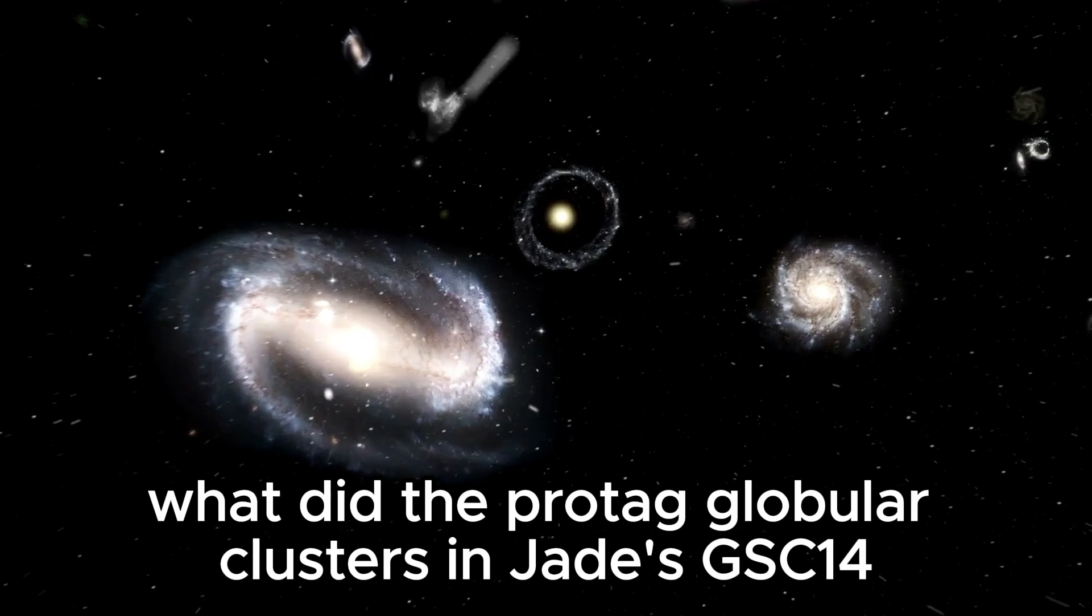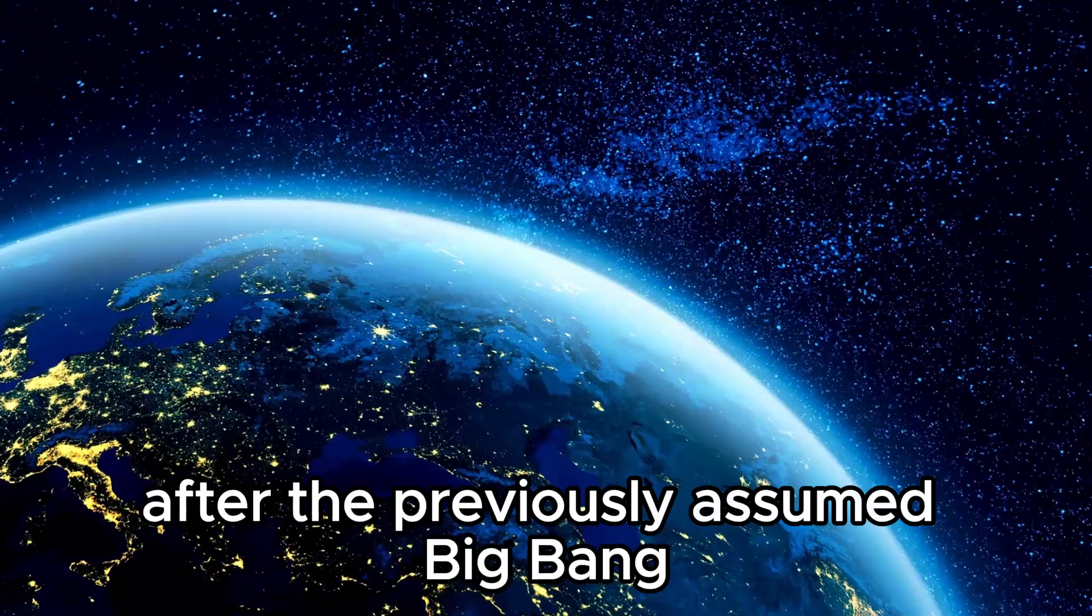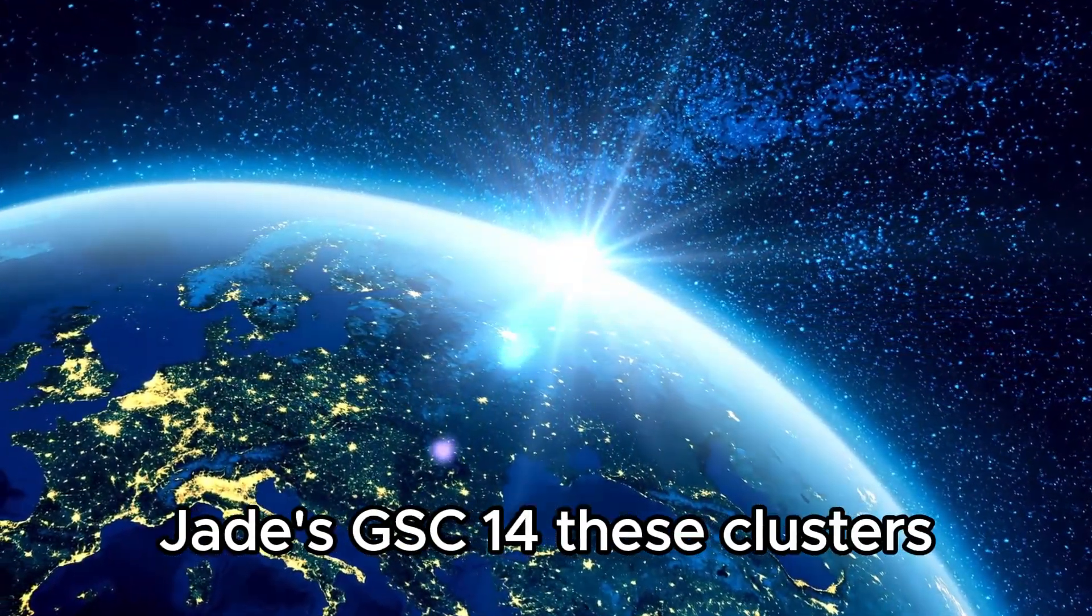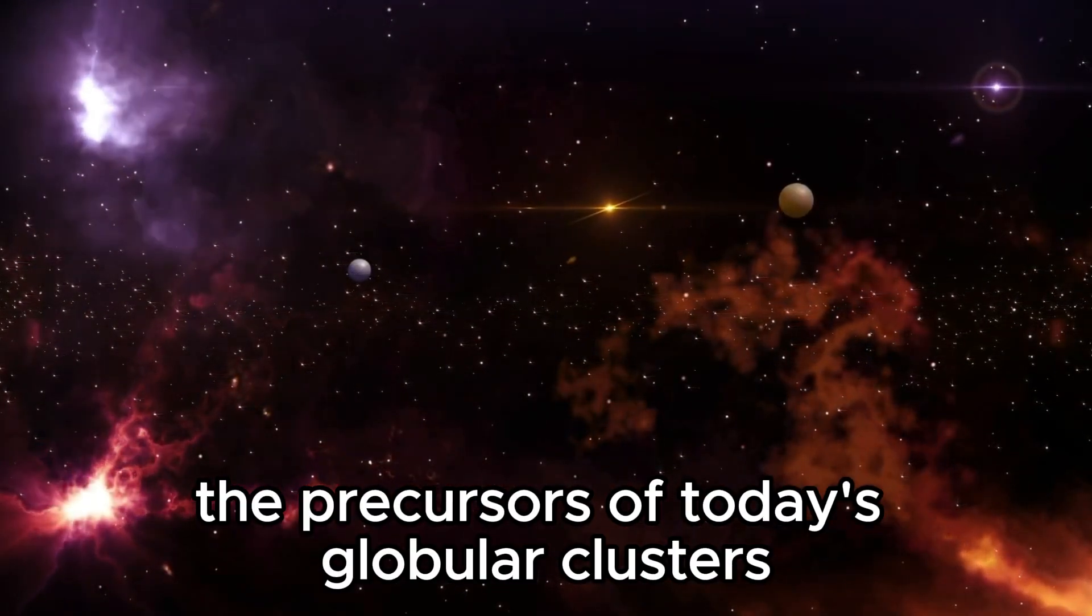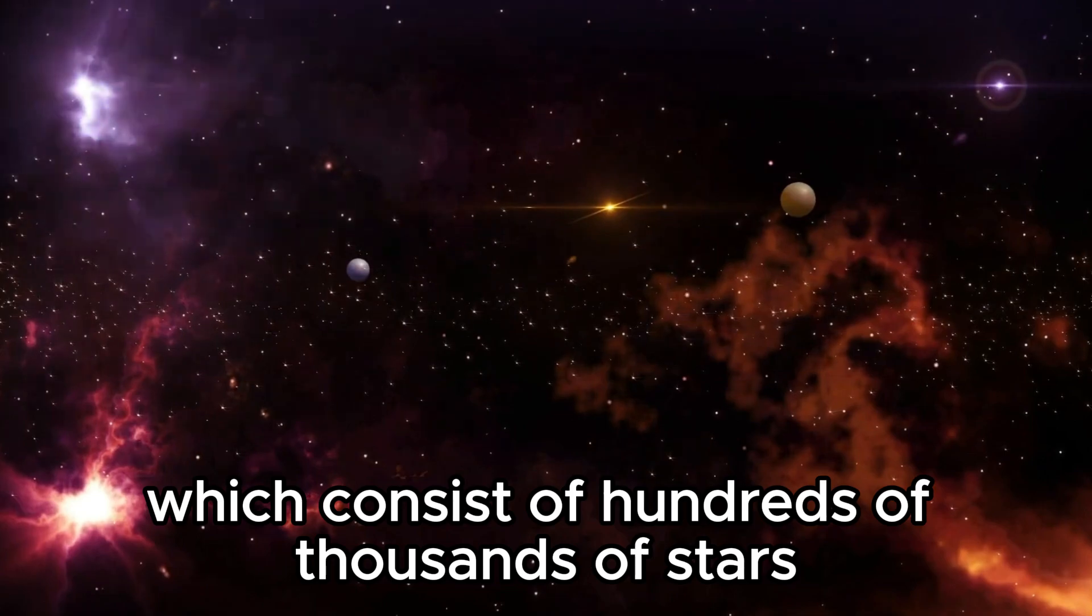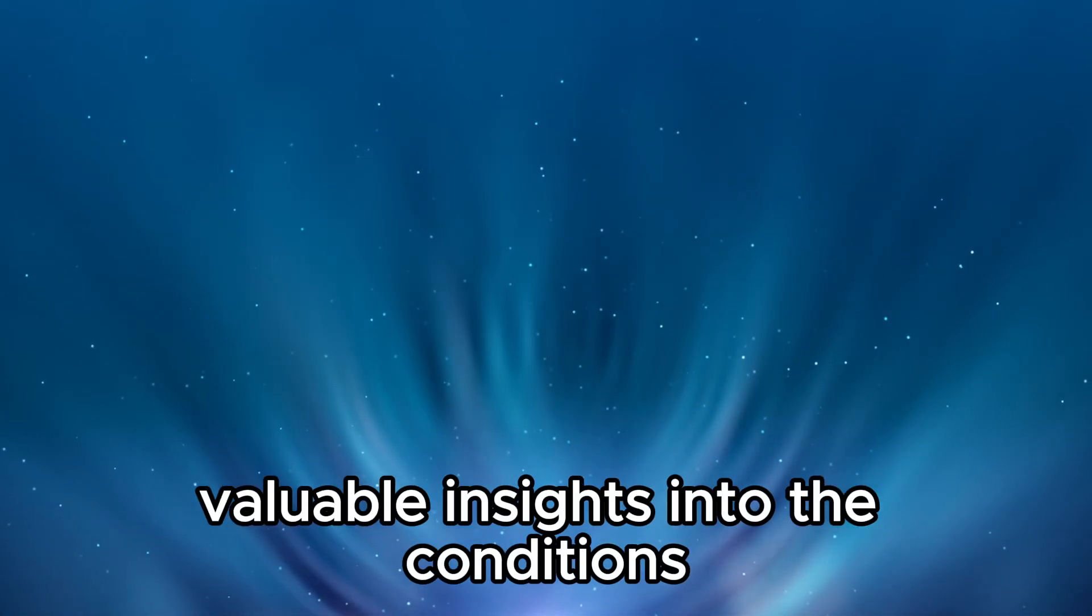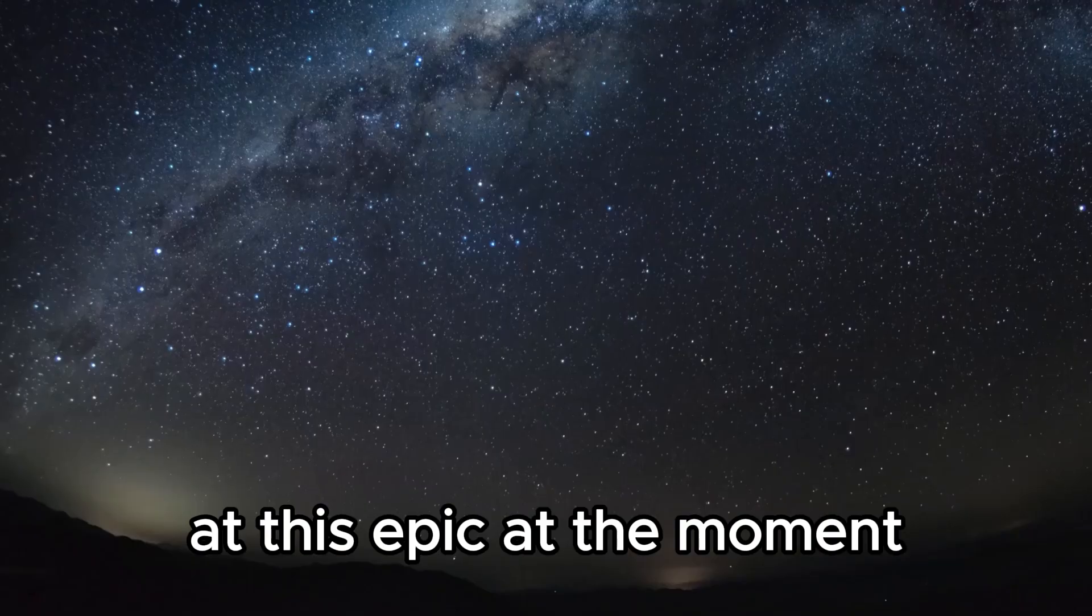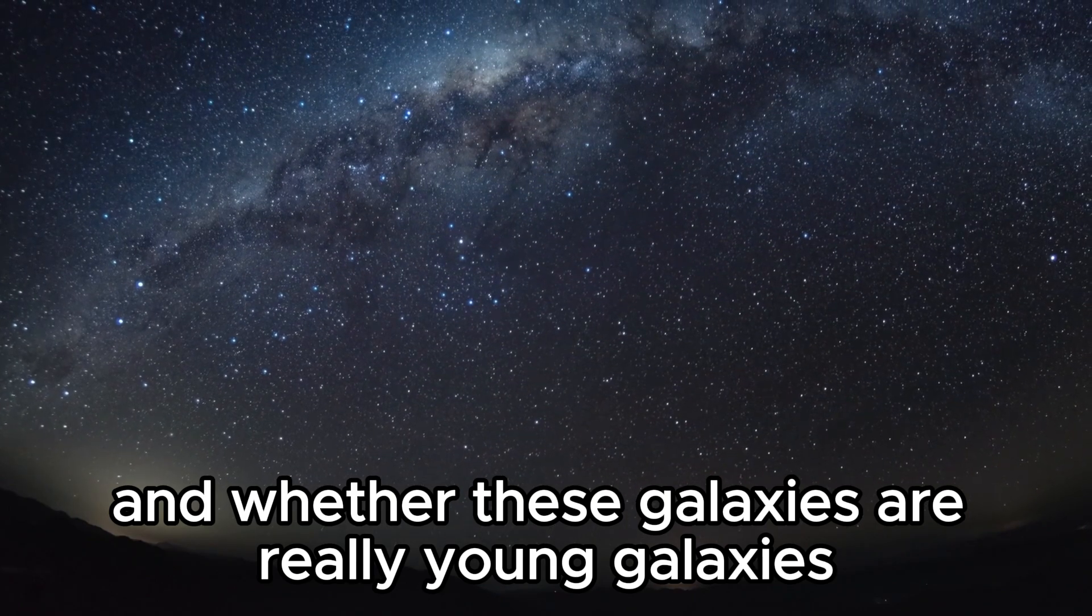What did the protoglobular clusters in Jade's GSC 14 reveal only around 290 million years after the previously assumed Big Bang? So-called protoglobular clusters formed in the galaxy Jade's GSC 14. These clusters are considered to be the precursors of today's globular clusters, which consist of hundreds of thousands of stars. By observing protoglobular clusters in this early galaxy, scientists hope to gain valuable insights into the conditions and processes of star formation at this epoch. At the moment, every clue counts if we want to find out what really happened at this time and whether these galaxies are really young galaxies.